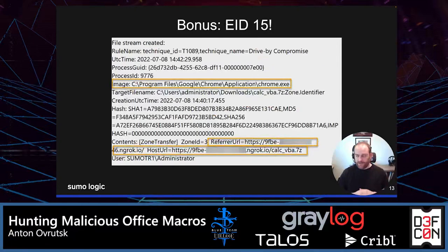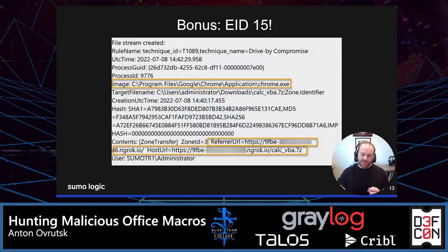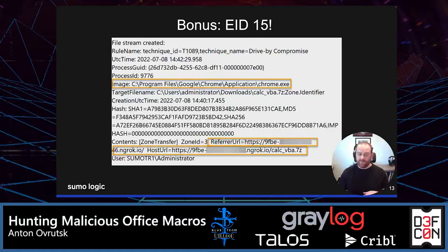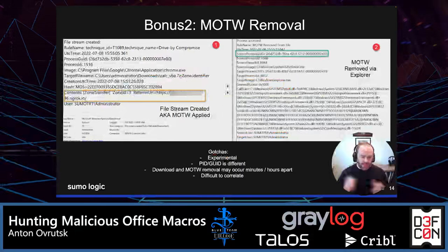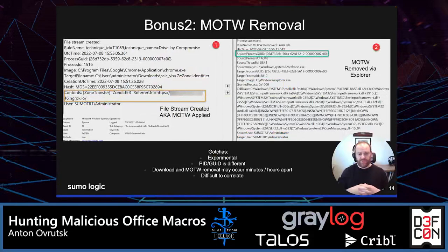I should specifically call out Sysmon Event ID 15, which is file stream created. With this event, you can actually see what processes downloaded a certain file and where that file came from. In this screenshot, you can see that my macro, found in the encrypted zip file, was downloaded from ngrok.io — which is a potentially suspicious domain.